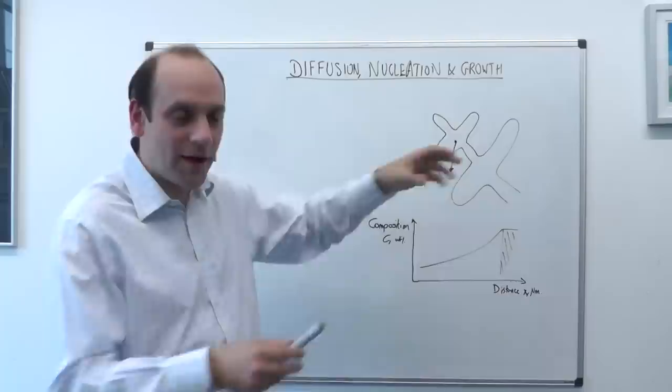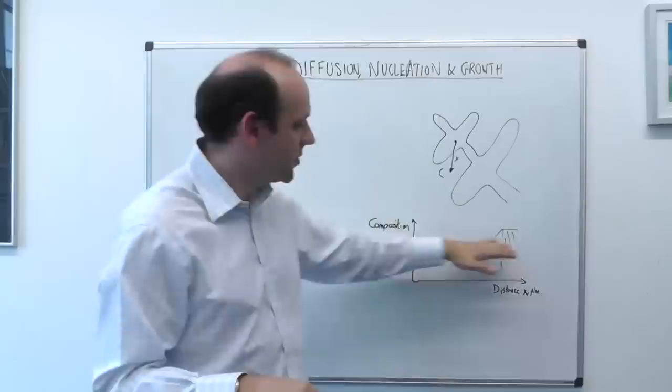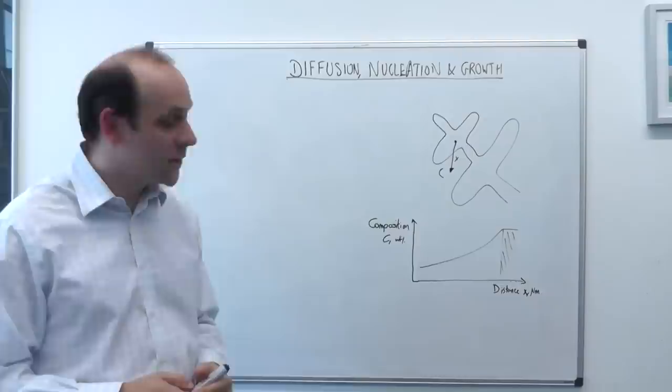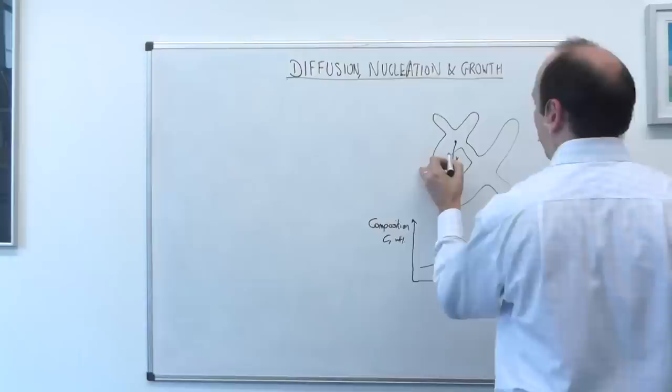We said that we would want to homogenize this composition by heat treating it so that all of the atoms could interdiffuse and level out this composition profile to the alloy composition. This happens by a process called diffusion, which you'll study more in 102, but this is the brief introduction to why that occurs.